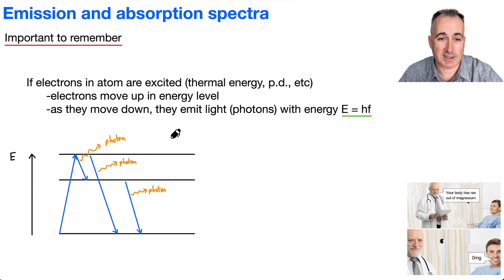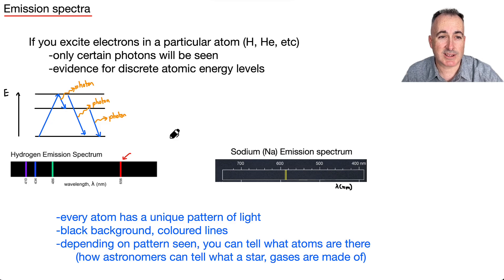So what can we do with this? Well, this means that if you excite these electrons in a particular atom, for example hydrogen or helium or whatever element you want. For example, here we've got hydrogen. Here, for example, we've got sodium, which is Na. The interesting thing is because there's only certain of these transitions allowed, that means you've got these discrete atomic energy levels. And what does discrete mean? Discrete means it's quantized, which means only certain values are allowed.